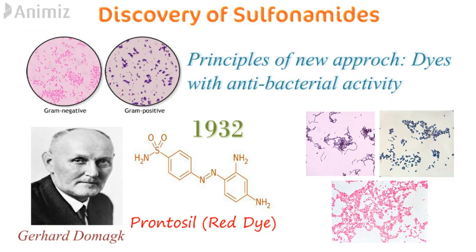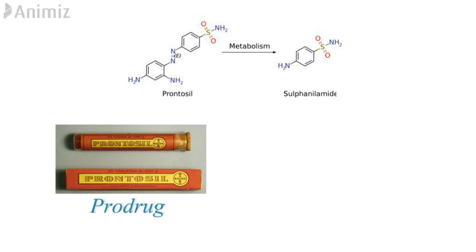Prontosil was a prodrug, meaning it gets converted to its active form — sulfonamide — inside the body. But since its active form was already known, Prontosil was not eligible for a patent. This led to the development of second-generation sulfonamides.